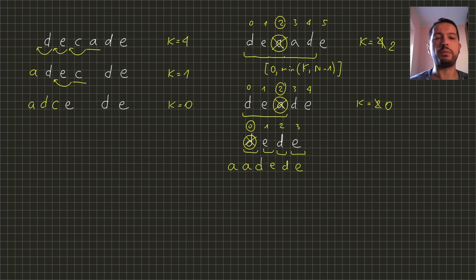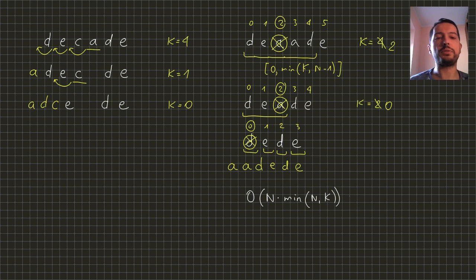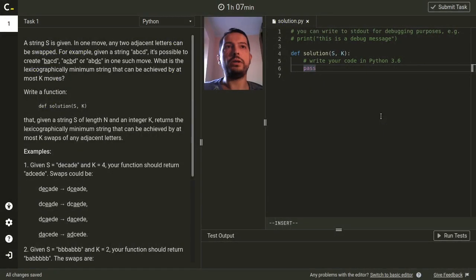What is the time complexity of this solution? Well, we have n steps and in each step we need to take a minimum over a range whose length is bounded by k and by n. So this is O(n times minimum of n and k). In terms of the length of the string alone, this is not bigger than n squared. Okay, I think we are ready for implementation.